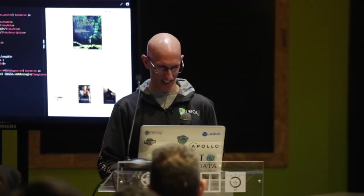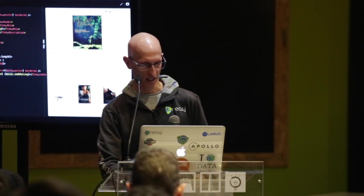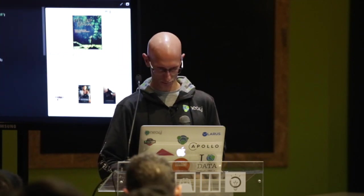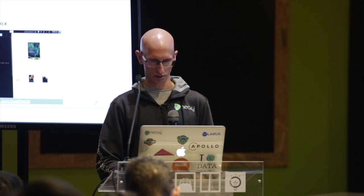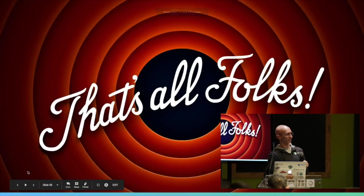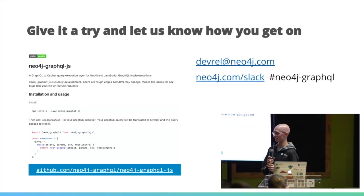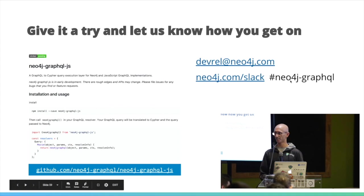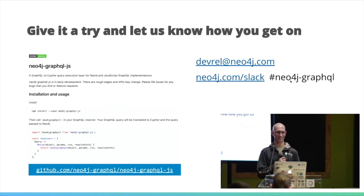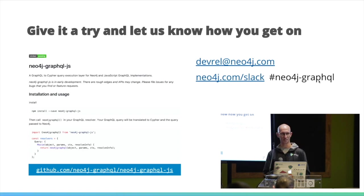There's not much more to show — this is a fairly standard React application and we're roughly following React patterns. If you think this is interesting enough to try out, the npm library is available. We have a Neo4j Slack community at neo4j.com/slack with a GraphQL channel if you need help, or you can email us. Thank you!